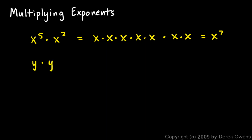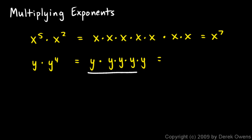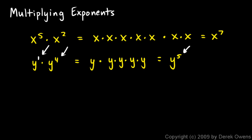What if we have y times y to the fourth? That first y, multiplied by y to the fourth — which is y times y times y times y — gives us 5 y's multiplied together, so that's y to the fifth. Notice that y could be thought of as y to the power of 1, and the 1 and the 4 add up to 5.